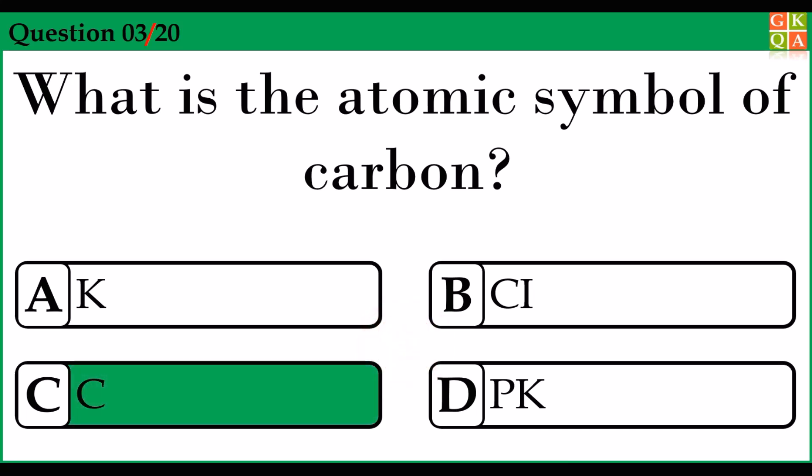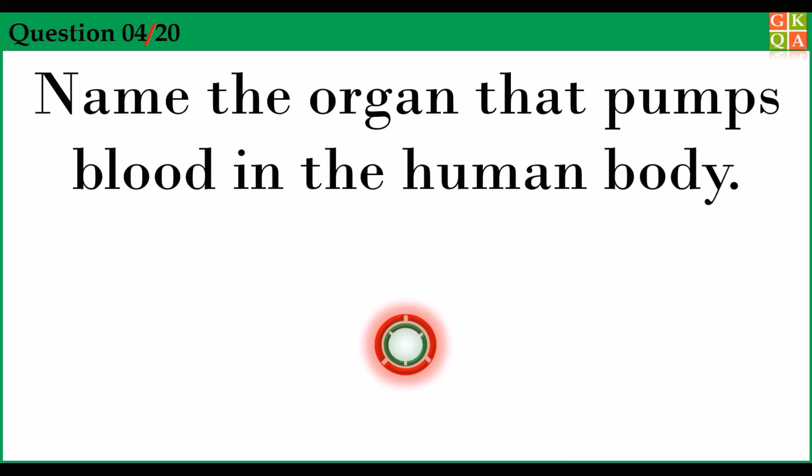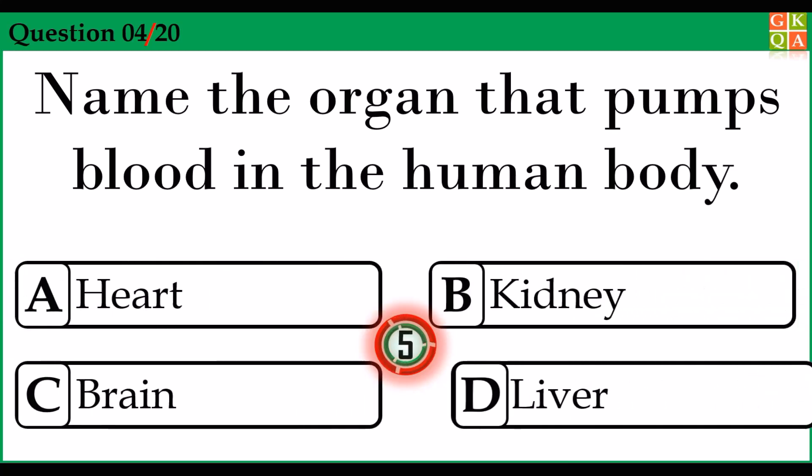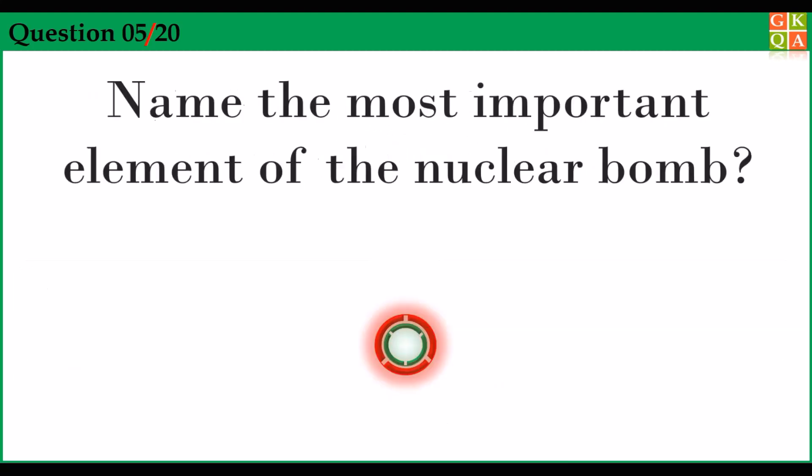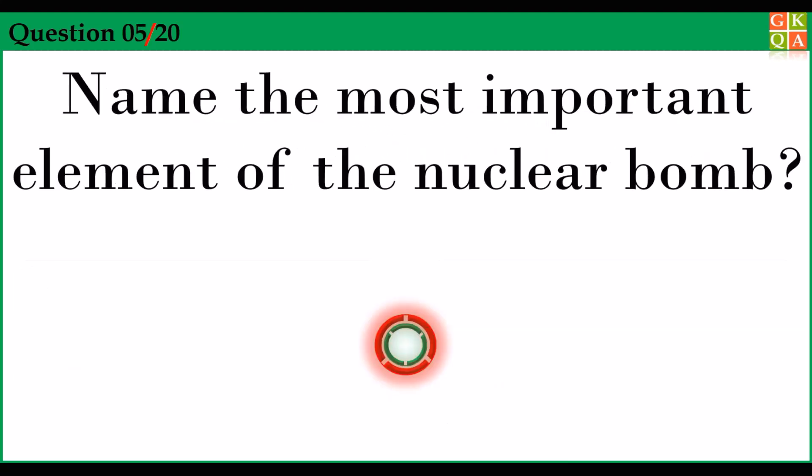Answer option C: C. Name the organ that pumps blood in the human body. Answer option A: heart. Name the most important element of the nuclear bomb.